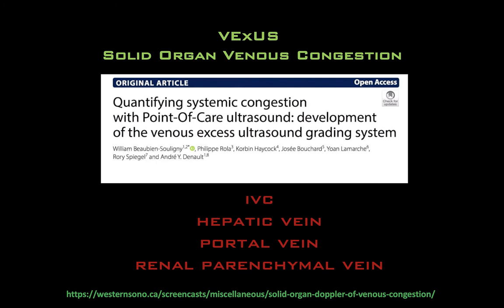A much more difficult and nuanced ultrasound exam for fluid tolerance that is very popular and up and coming is the evaluation of solid organ congestion. This is quite an advanced topic requiring a solid understanding of spectral Doppler and hemodynamics. While we recognize the respiratory consequences of volume overload are important, we are becoming increasingly aware of the negative effects of venous congestion on solid organs including the liver, the gut, and the kidney. The VEXUS scan — the solid organ venous congestion scan — involves looking at four main vessels and solid organs to interrogate for evidence of organ congestion. I urge you to read more about this as it merits its own lecture.